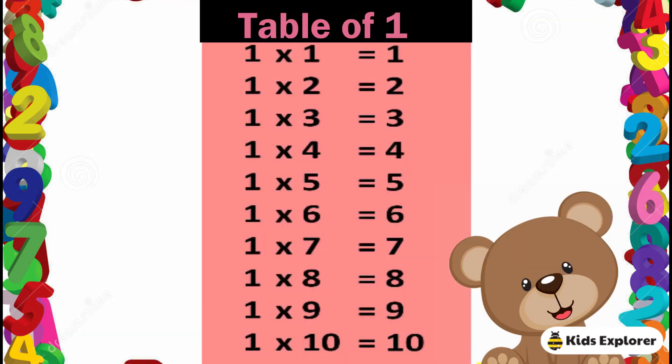Table of 1. 1 1's are 1, 1 2's are 2, 1 3's are 3, 1 4's are 4, 1 5's are 5, 1 6's are 6, 1 7's are 7, 1 8's are 8, 1 9's are 9, 1 10's are 10.